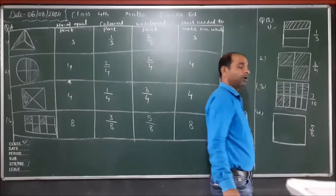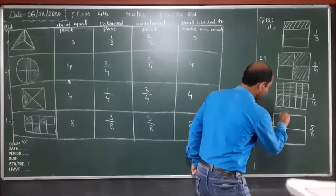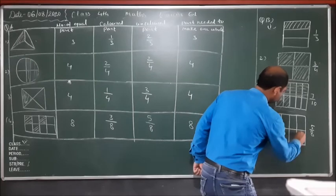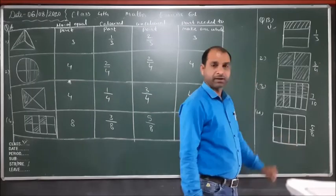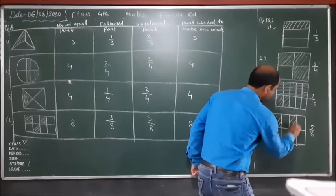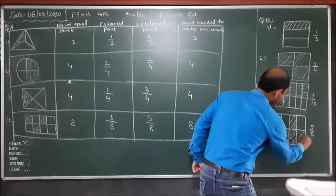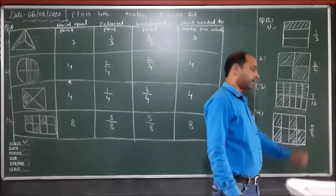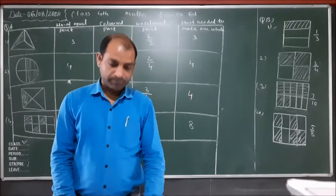For five upon eight: we divide into eight parts — one, two, three, four, five, six, seven, eight parts. We color five parts — one, two, three, four, five. Five parts are colored. Question B is now completed.